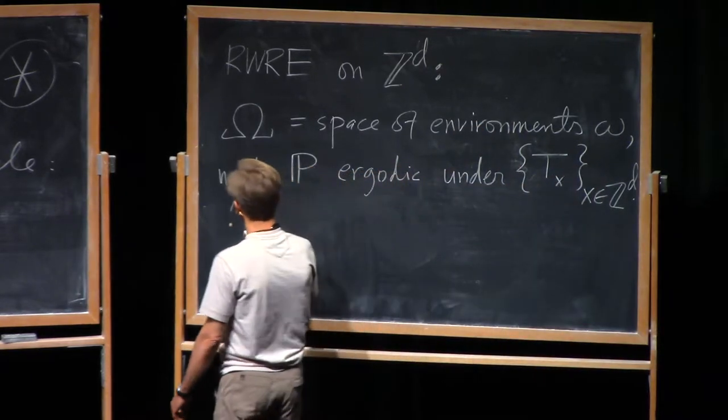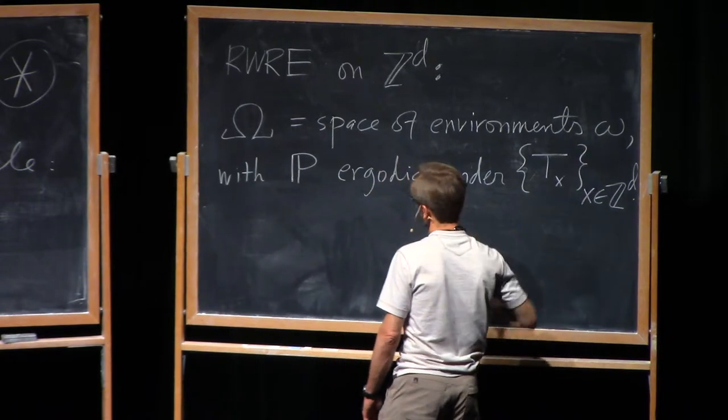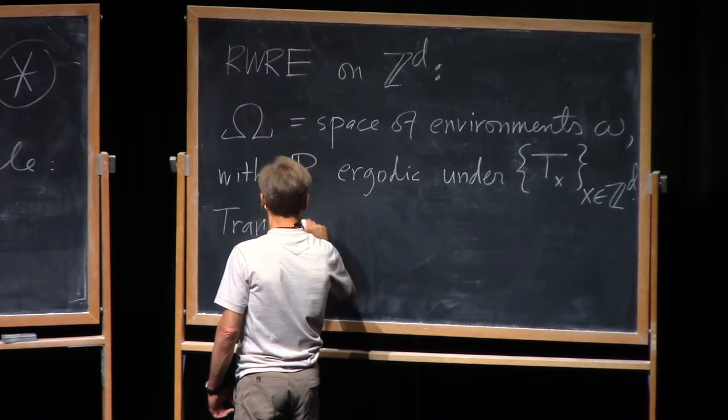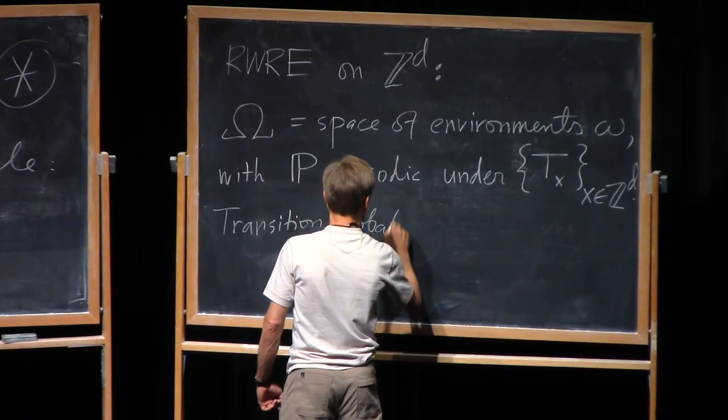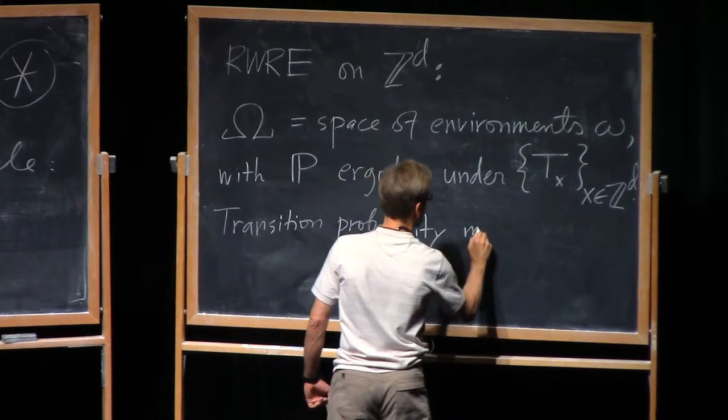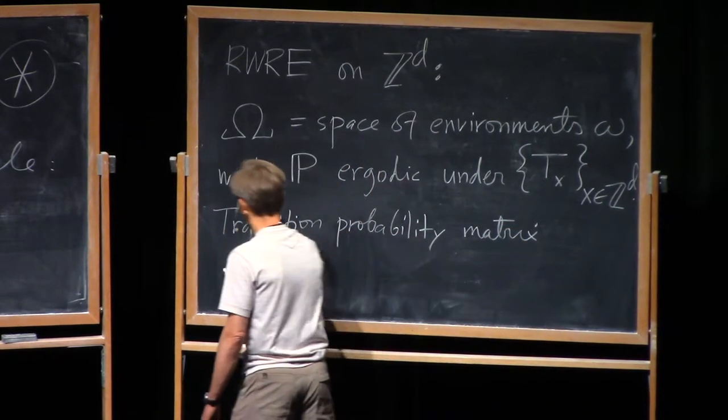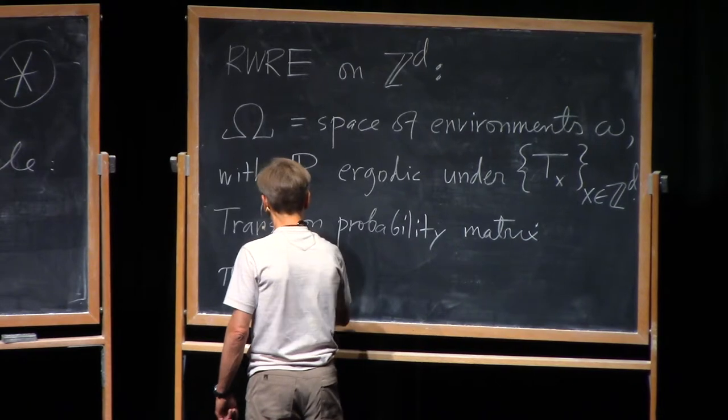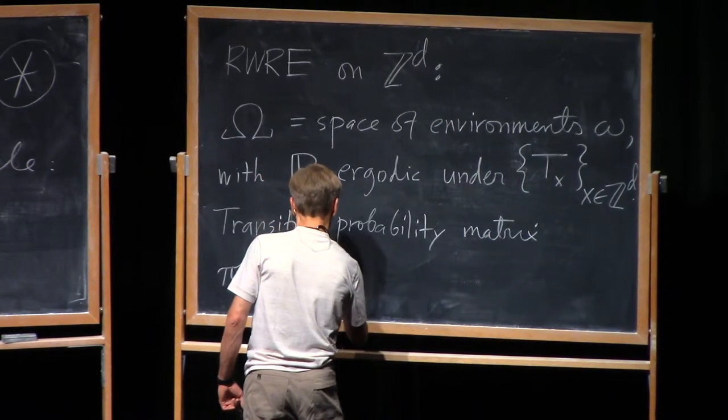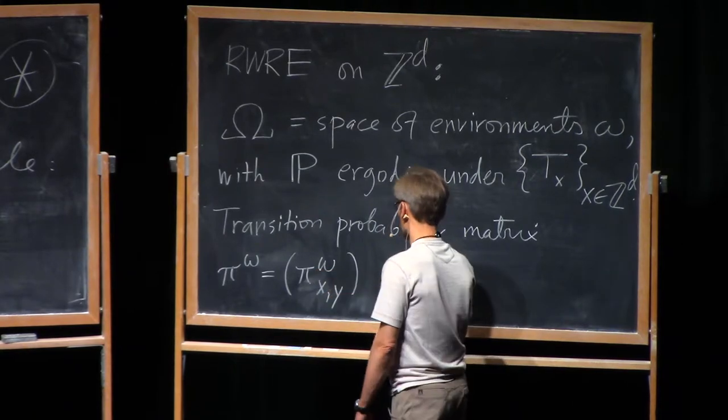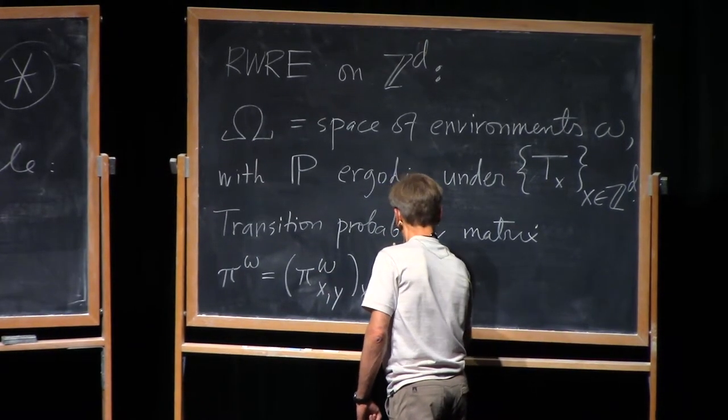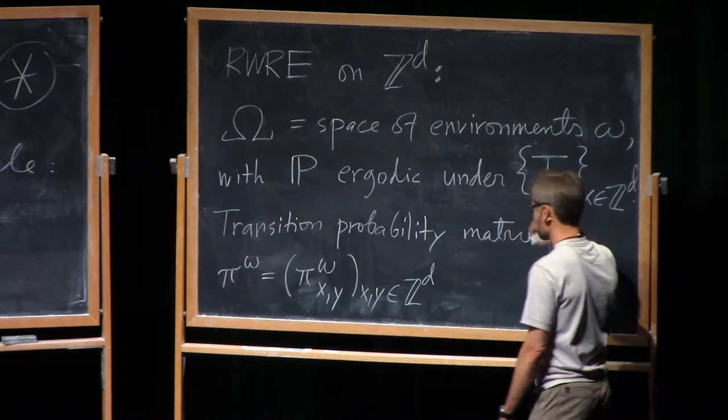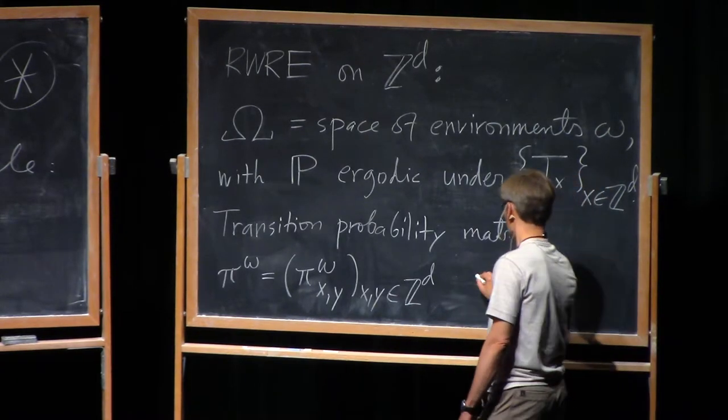So, that's the background situation, an ergodic group action on a probability space. And then, each of these environments, omega, drives a Markov chain on Z^D. So, there's a function that takes omega into a transition probability matrix. And I'll denote that by pi. And I'll put the omega upstairs. So, pi of omega is a transition probability matrix on the lattice. So, the matrix elements are pi sub X, Y.